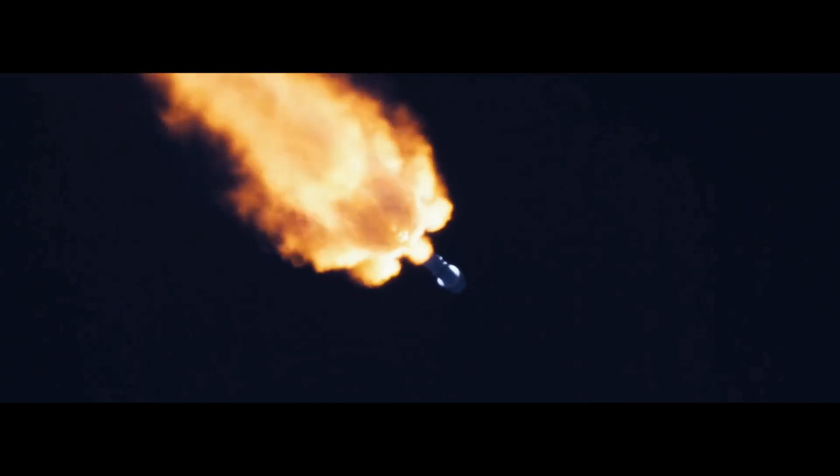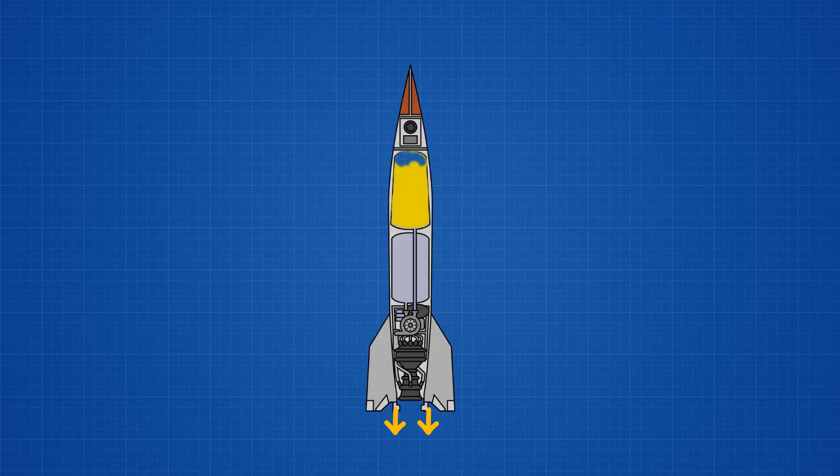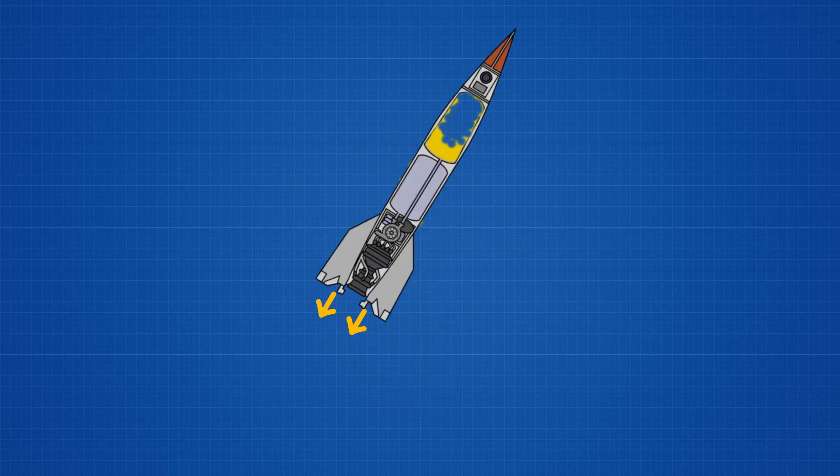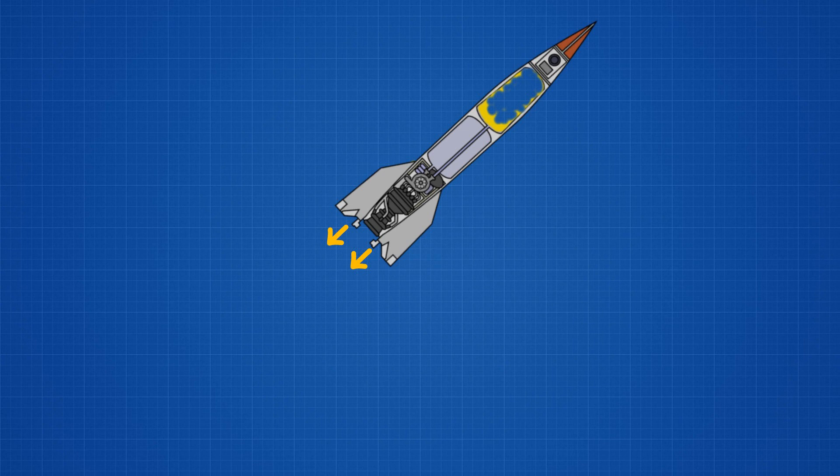When the thrust equals to more than the weight of the rocket, the rocket lifts up. As the rocket moves up, it continuously burns fuel and its fuel mass reduces. But we still have an empty tank to carry.